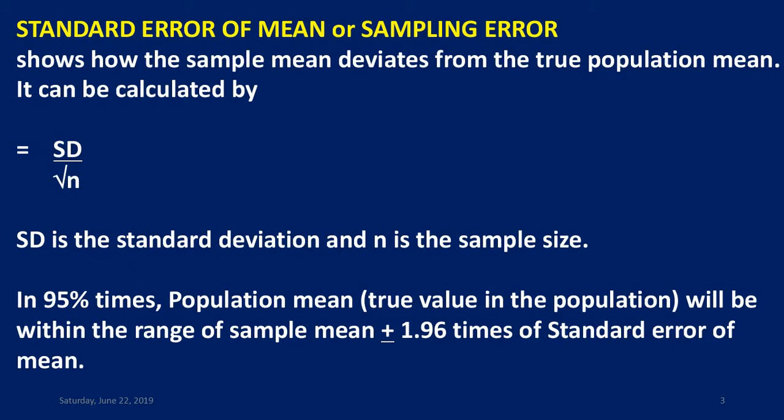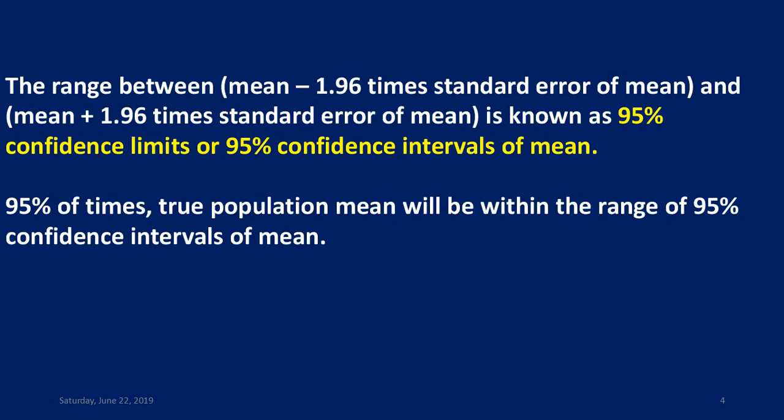95% of the time, the true population mean or true value in the population will be within the range of sample mean plus or minus 1.96 times standard error of mean. The range between mean minus 1.96 times standard error of mean and mean plus 1.96 times standard error of mean is known as the 95% confidence interval.